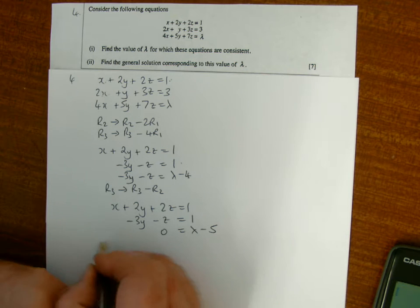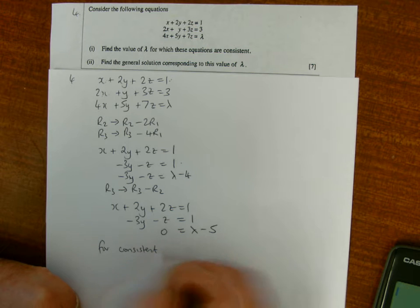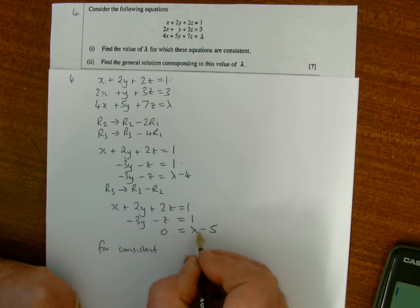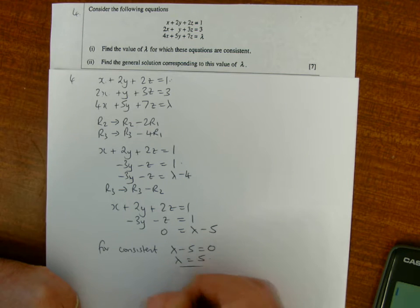Now if they're consistent, for the equations to be consistent, I need 0 equals 0 in the third line, so I need lambda minus 5 to equal 0, so lambda is equal to 5.